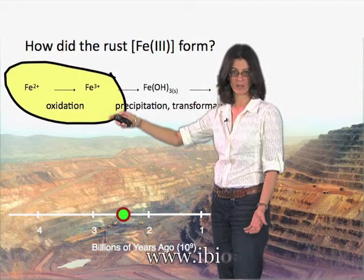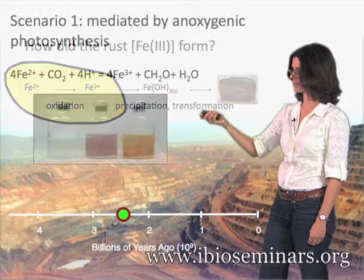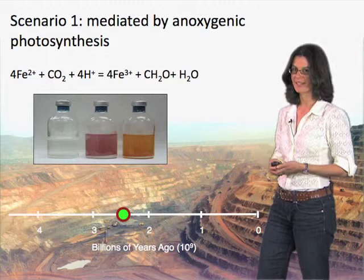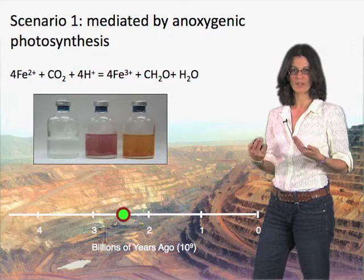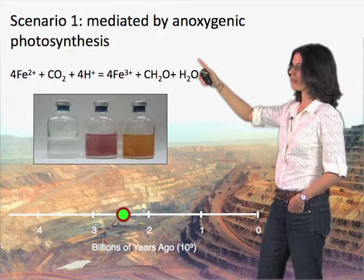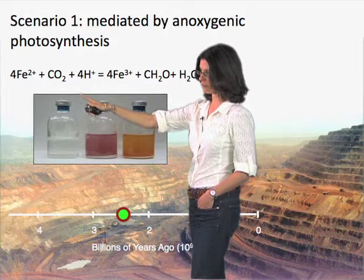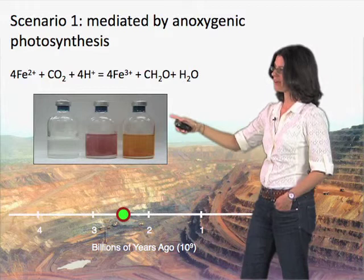This initial step is the critical one in terms of giving us insight into microbial activities on the ancient Earth. The first scenario involves a very primitive type of photosynthetic organism — primitive in the sense that it's a type of photosynthesis that does not generate oxygen. It's called anoxygenic, meaning there is an electron donor — in this case ferrous iron — that is oxidized to ferric iron, and that powers the reduction of inorganic carbon, CO2, to biomass.